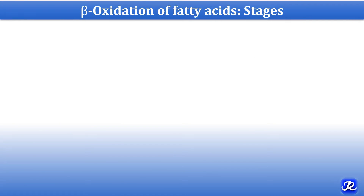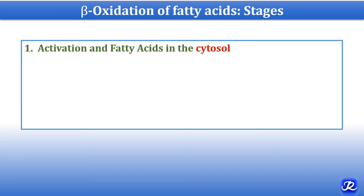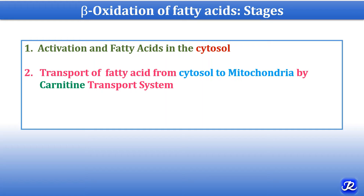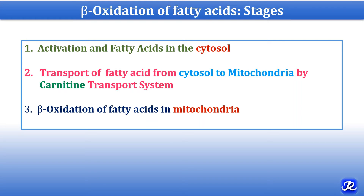What are the stages of beta oxidation of fatty acids? The first is activation of fatty acids in the cytosol. The fatty acids need to be activated prior to their oxidation. Then the activated fatty acid is transported from the cytosol to the mitochondria by the carnitine transport system, because the activated fatty acid cannot directly enter the mitochondria. Third is the actual beta oxidation of fatty acids in the mitochondria. These are the three important stages.